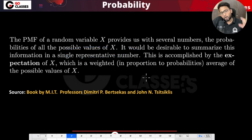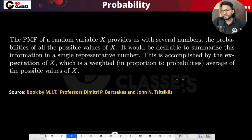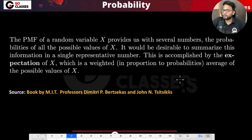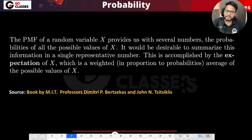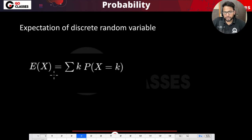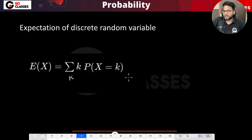I want to represent all of this information in just a single number. Obviously it can't be as accurate as the full PMF, but to some extent we can represent the whole summary in one number. This is accomplished by the expectation of x, which is a weighted average — proportional to probabilities — of the possible values of x.